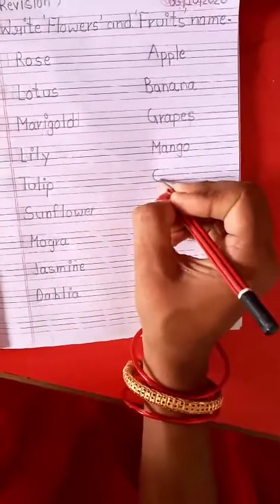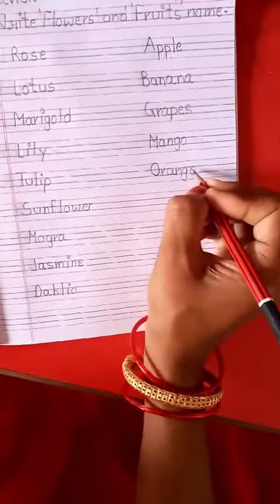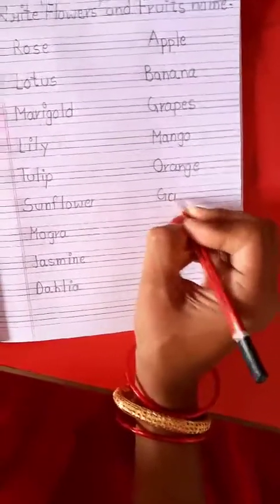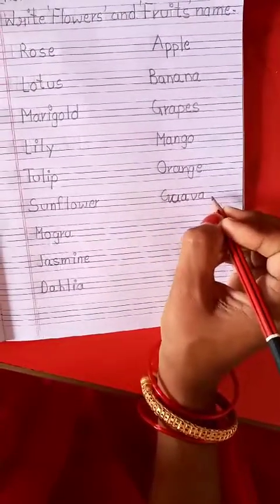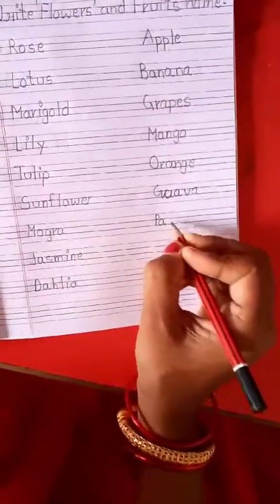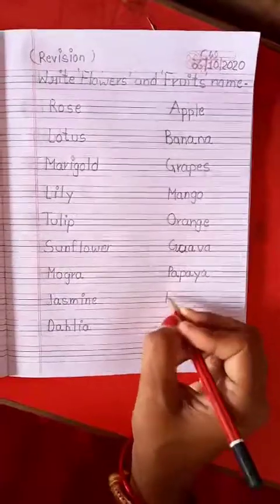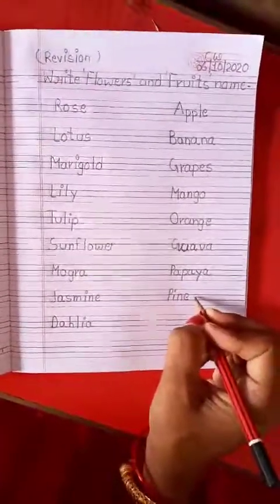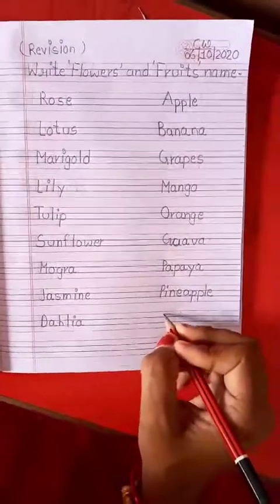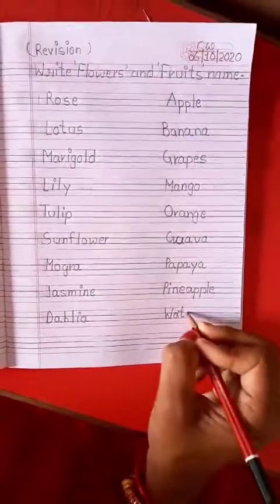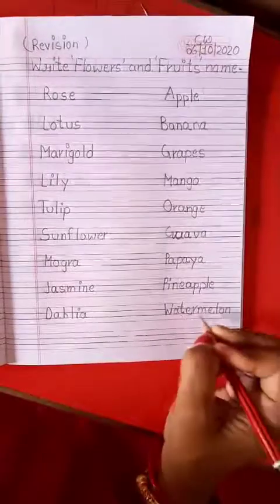Clear? O, R, A, N, G, E. Orange. G, U, A, B, A. Guava. P, A, P, A, Y, A. Papaya. P, I, N, E, A, P, P, L, E. Pineapple. W, A, T, E, R, M, E, L, O, N. Melon. Watermelon. Complete?